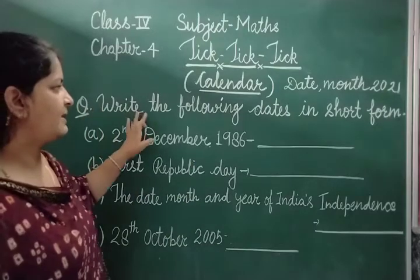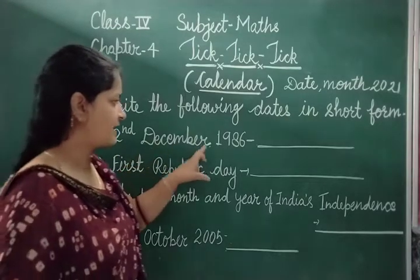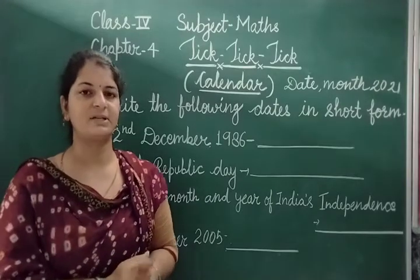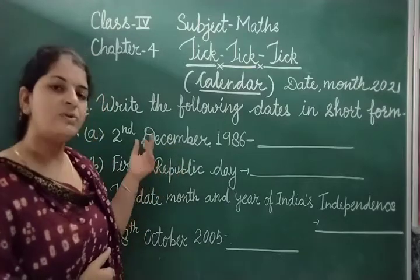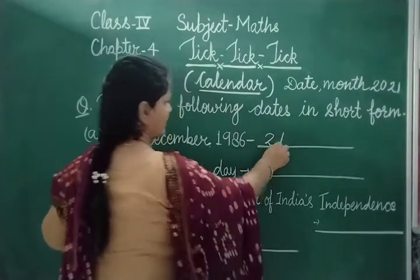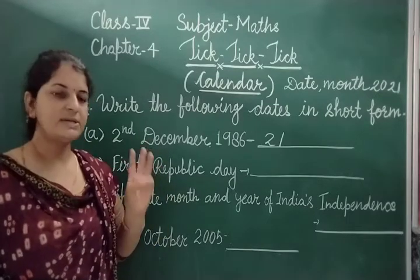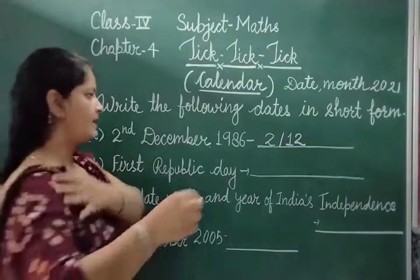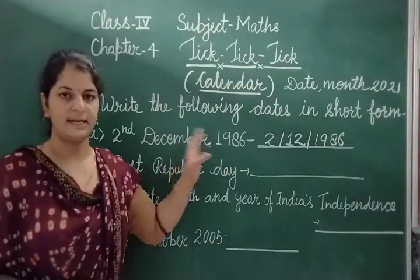Now we have a question: write the following dates in short form. The question is: 2nd December 1986 — you have to write it in short form. So the date is 2, and December is the 12th month, and the year is 1986. So the short form is 2/12/1986.